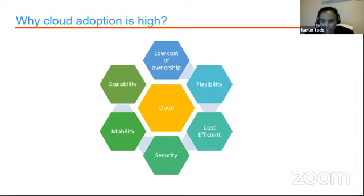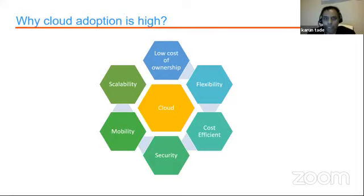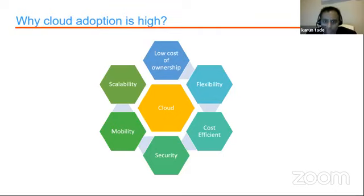Just think about it — if there was no smartphone, there are companies you might never have heard of, like Uber, Ola, and even Netflix. These companies came into existence only because of the smartphone and the cloud infrastructure available on the back-end. Let me take an example and explain how you get all these benefits of the cloud — like flexibility, cost efficiency, and all that.